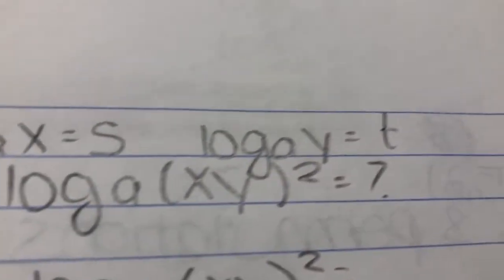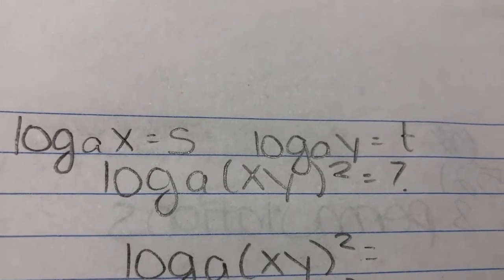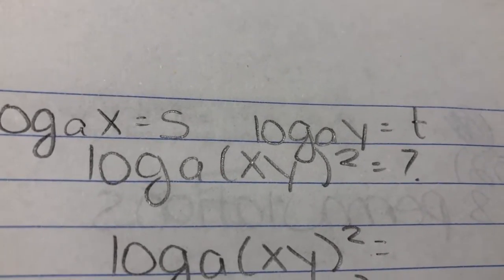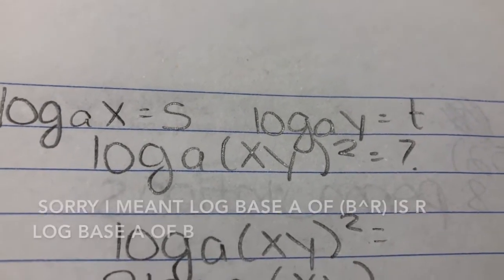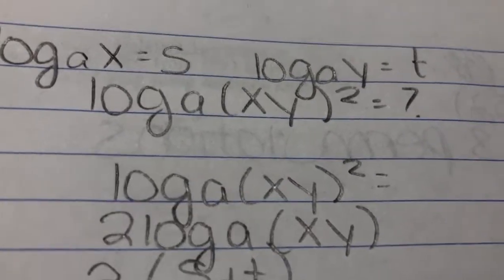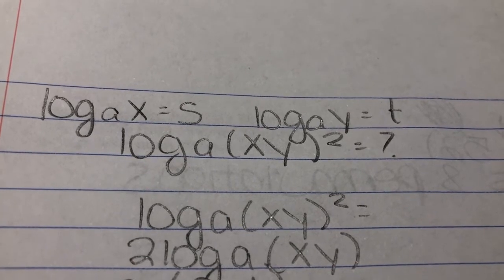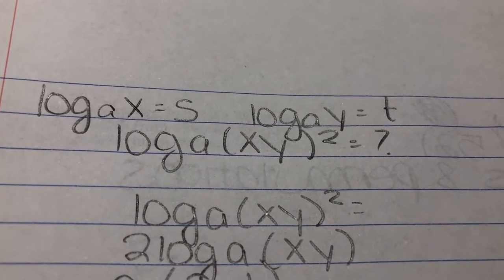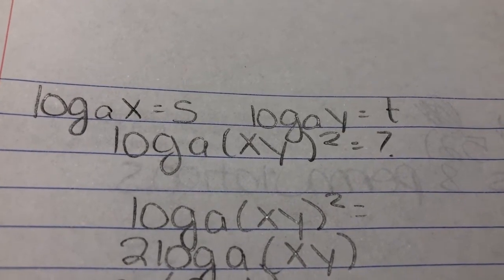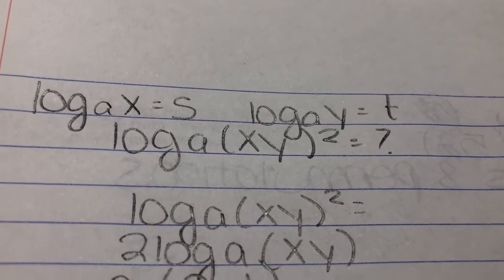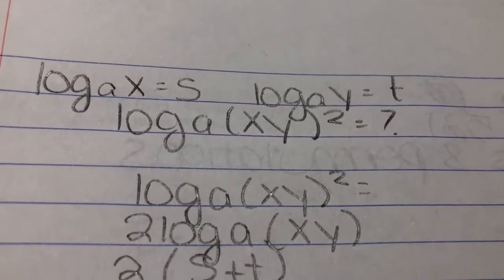Here's the information they give you: log base A of x equals S, log base A of y equals T, and they ask for log base A of (x × y²). Using the power rule, log base A of (xy²) equals 2 × log_A(xy). Then using the product rule, log_A(xy) equals log_A(x) plus log_A(y). Since log_A(x) = S and log_A(y) = T, we get 2(S + T). That was question 59 out of 60 — literally one of the hardest ACT questions — and I just showed you in three steps.